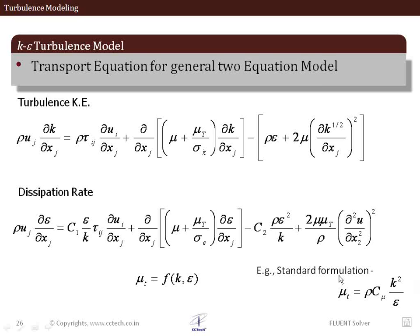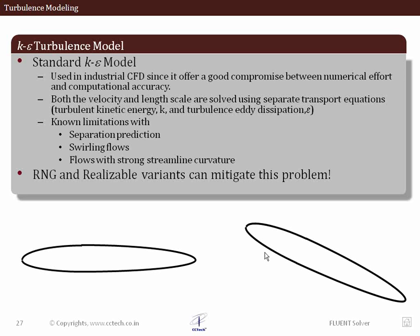Once you calculate this in each and every cell, we express μt in terms of k and epsilon and some modeling constants like cμ. These are all accessible on the Fluent GUI on the turbulence modeling panel.